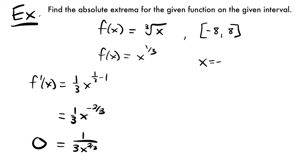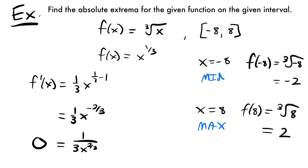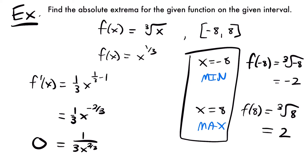So let's check x equals negative 8 and x equals 8. Plugging in negative 8, f of negative 8 equals the cube root of negative 8, which is negative 2. Plugging in x equals 8, f of 8 equals the cube root of 8, which is positive 2. Comparing our y values, 2 is greater than negative 2, so x equals 8 is our maximum, and negative 8 is our minimum. So the point (8, 2) is our maximum and the point (negative 8, negative 2) is our minimum.